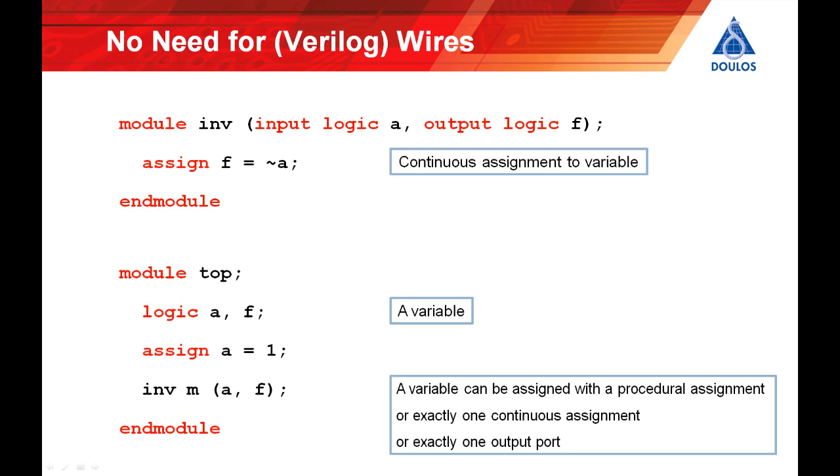Inserting the word logic into an input or output declaration makes it a variable rather than a wire. Without the word logic input A and output F would have been wires which would have worked perfectly well. With the word logic input A and output F become variables and the point is that that's now acceptable too because in SystemVerilog you are allowed to make a continuous assignment to a variable. So that's the first rule to be relaxed. Continuous assignments to variables are permitted.